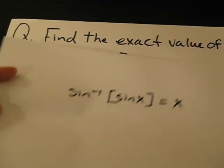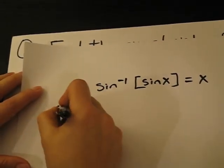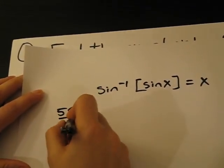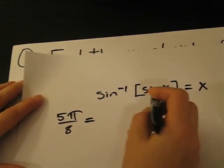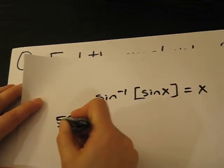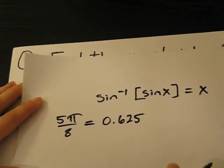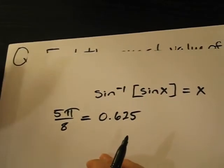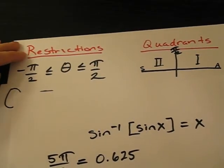In our case, five-pi over eight, and I like to make it a decimal so I can see it a little bit better. Five-pi over eight, and if you just ignore the pi for a minute and just look at it as the fraction, the five-pi over eight is actually 0.625.